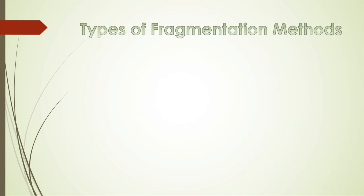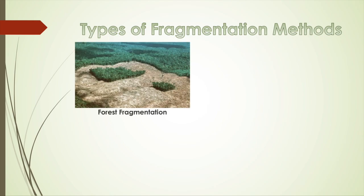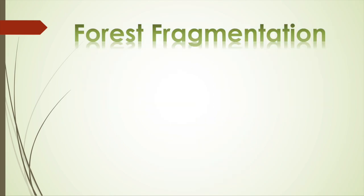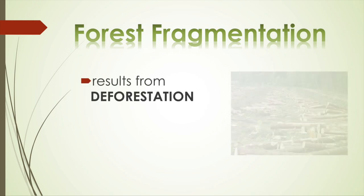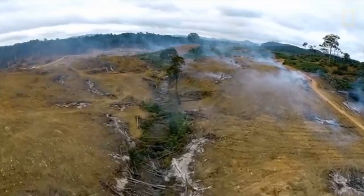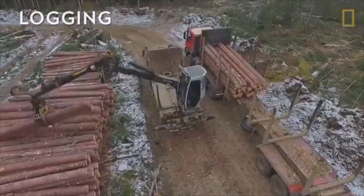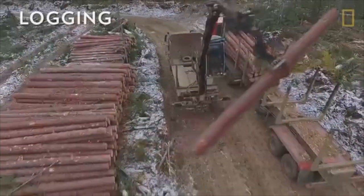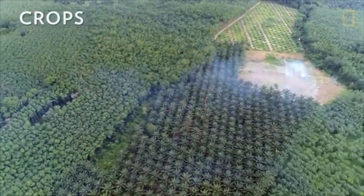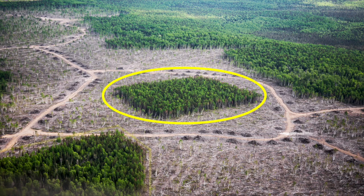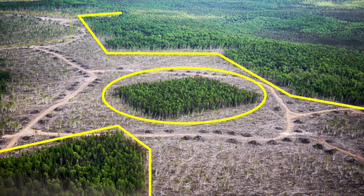Three terrestrial reasons for habitat fragmentation are deforestation, roads and highways, and fences. Forest fragmentation is a result of deforestation. Humans cut down trees for resources, but this affects the surrounding environment even if we're only cutting down some trees and leaving parts of the forest untouched. When we clear-cut areas of forests, we divide the forest habitat into smaller sections, which changes the dynamic of the ecosystem.